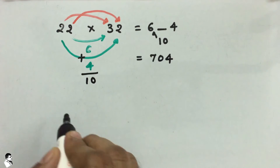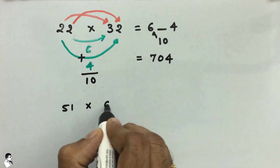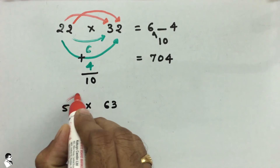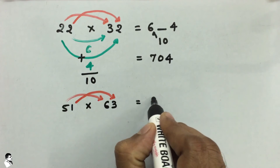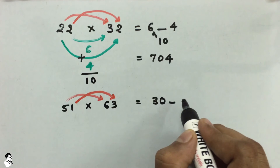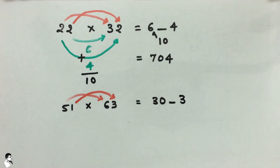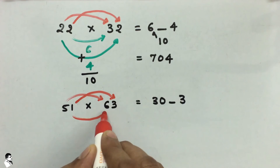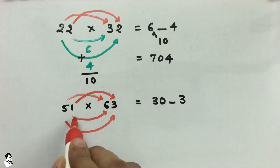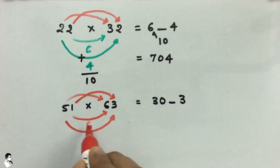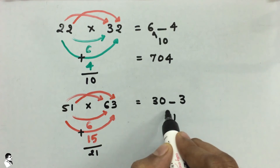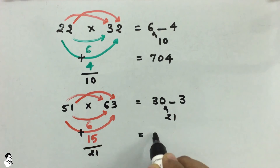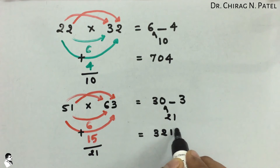Next example: 51 multiplied by 63. Multiply 5 into 6, which is 30 — make some space — and 1 into 3 is 3. For the middle: 1 into 6 is 6 and 5 into 3 is 15; their sum is 21. Write 21 here and carry the 2 forward to 30, so the answer is 3213.